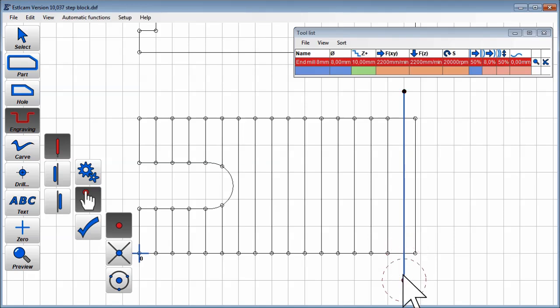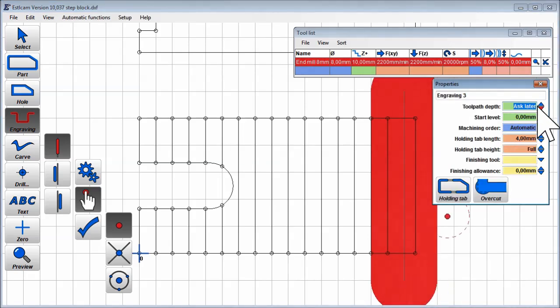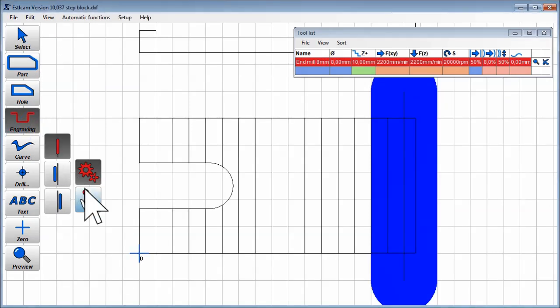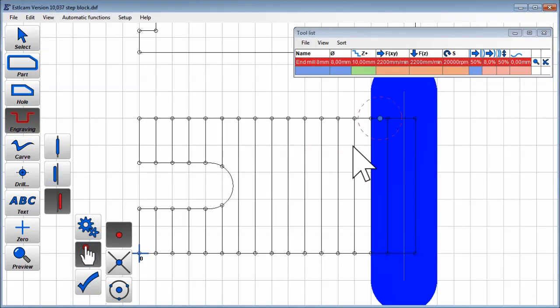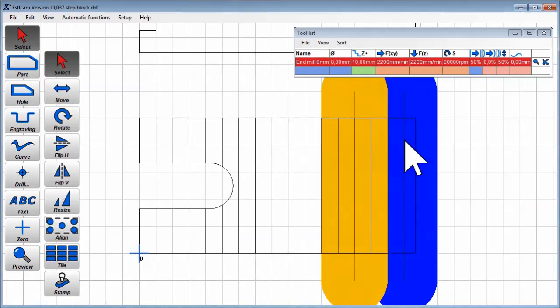The first one creates the flat top. Then we need 16 more to create all the steps. I've just created one and then tiled it 16 times.